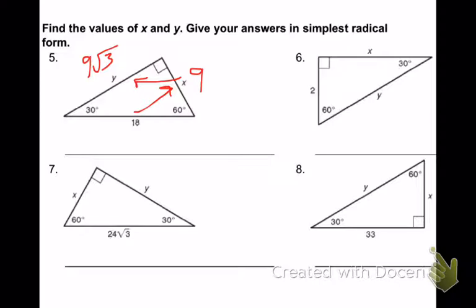Number 6: the short side is 2. The hypotenuse is double that, so it's 4. The long side is 2 square root of 3.